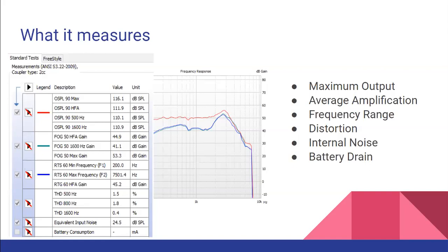We also look at internal noise — measuring how loud the hearing aid itself is. All electronic devices actually make some noise. Everything that has electricity has a hum to it, called a 60 hertz hum, and sometimes you may have heard this, especially if you have really good low-pitched hearing. If the hearing aid is making too much noise, it can interfere with your hearing, or you might hear a static or unusual sound, which can indicate an electrical malfunction in the hearing device.